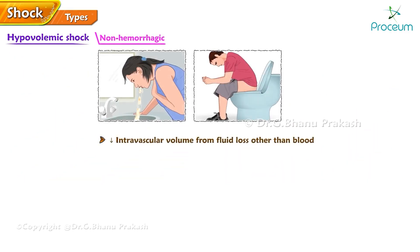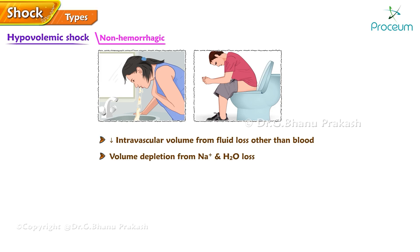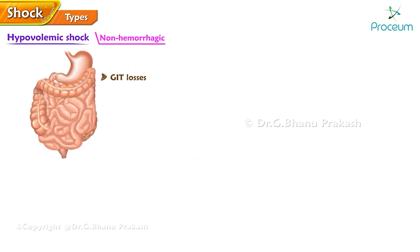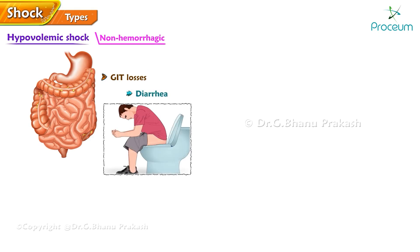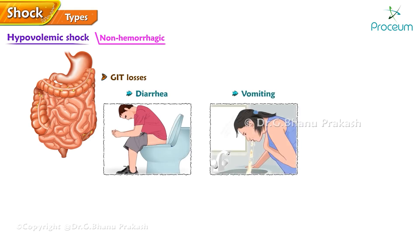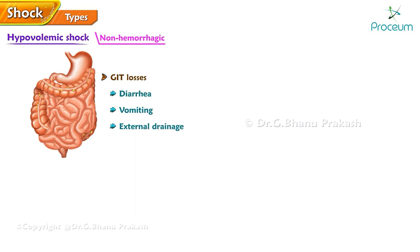Non-hemorrhagic shock occurs when reduced intravascular volume results from fluid loss other than blood. Volume depletion from loss of sodium and water can occur from a number of anatomic sites. Examples include gastrointestinal losses such as diarrhea, vomiting, and external drainage.